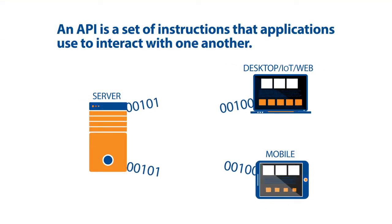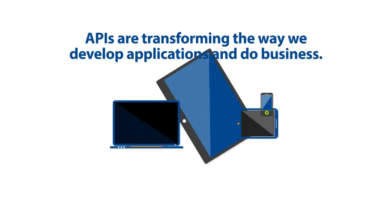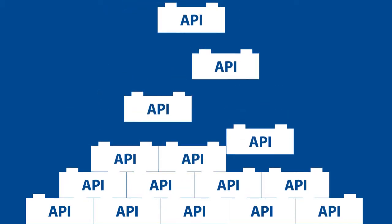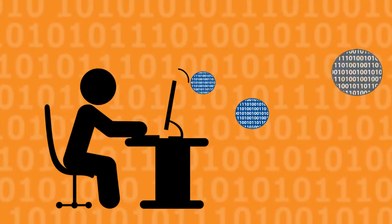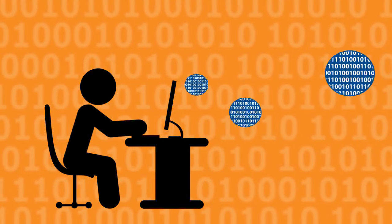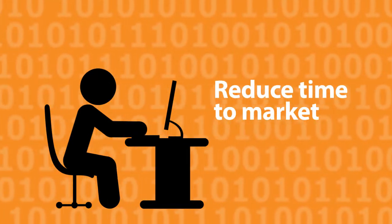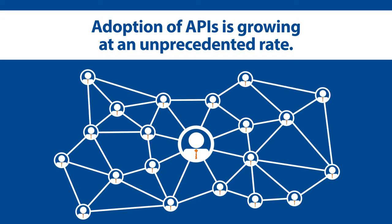An API is a set of instructions that applications use to interact with one another. APIs are transforming the way we develop applications and do business. They make development more like Lego building, integrating many common shared modules via API calls. They enable developers to tap into best-of-breed, off-the-shelf functionality that they might otherwise have to write from scratch, and in turn reduce time to market. Given their strategic value, adoption of APIs is growing at an unprecedented rate.